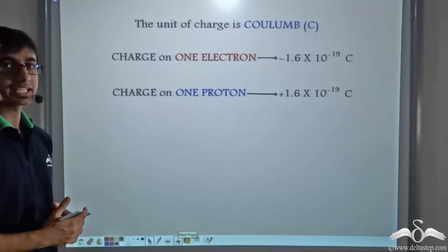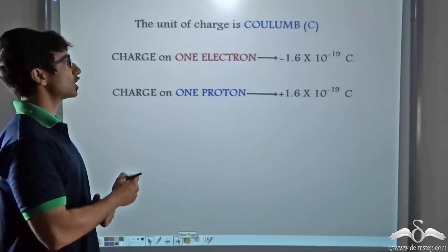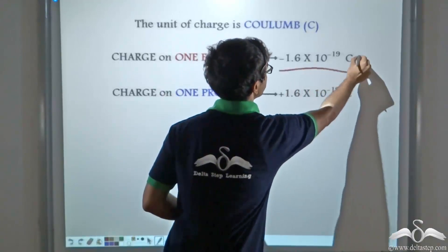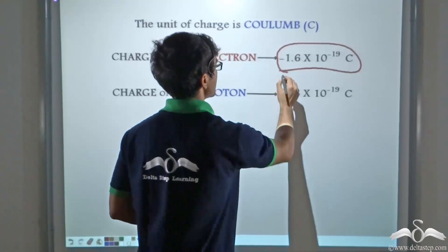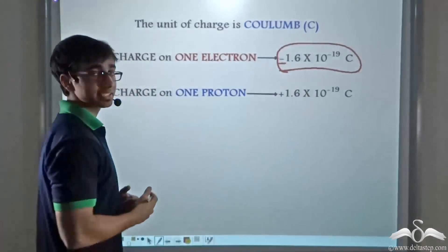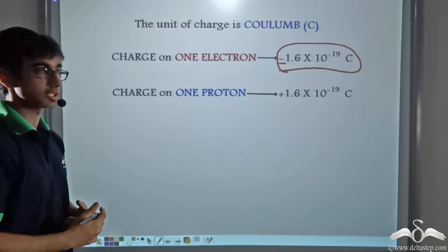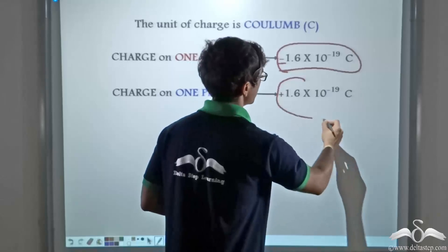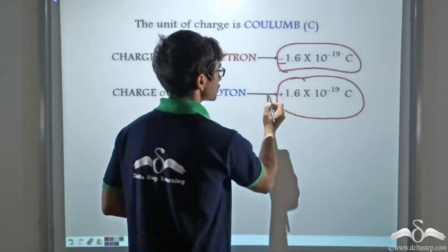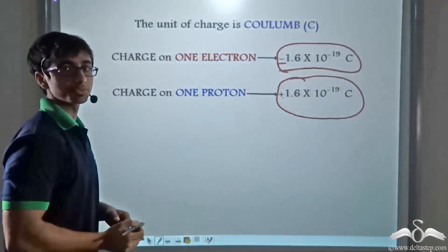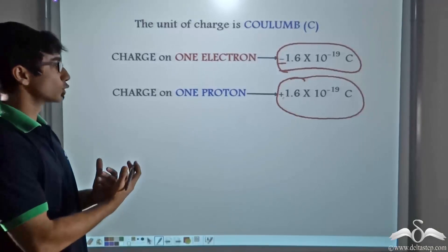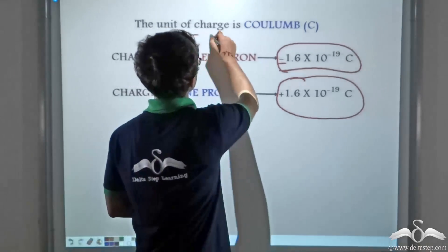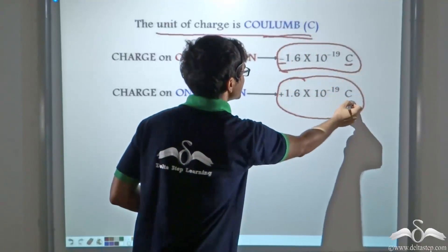Experimentally, it has been found that the charge on one electron is minus 1.6 × 10⁻¹⁹ coulombs — minus because the electron is a negatively charged particle. The charge on a proton has been experimentally found to be plus 1.6 × 10⁻¹⁹ coulombs, because the proton is a positively charged particle. The unit of charge is coulomb, represented by C.